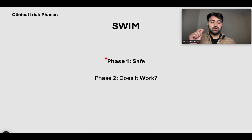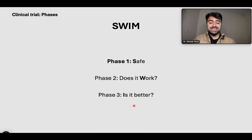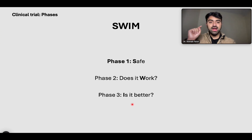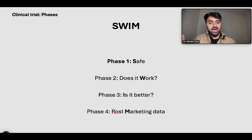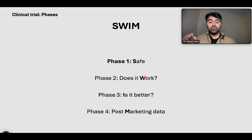Phase two is W — does it Work? You want to know the effectiveness or efficacy of your medication. Phase three is I — is it better than what we use right now? Is it better than our current standard of care? And phase four is M — post-marketing data, meaning the drug has now entered the market and you want to see how it is doing. So just remember SWIM: S is it safe, W does it work, I is it better, M post-marketing data.